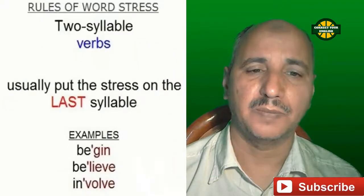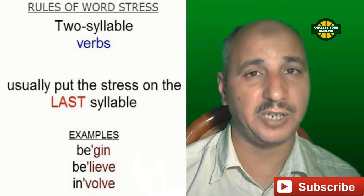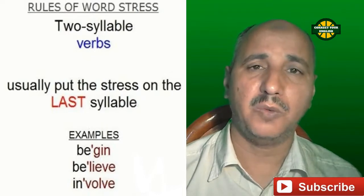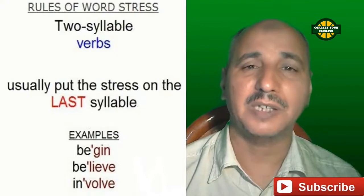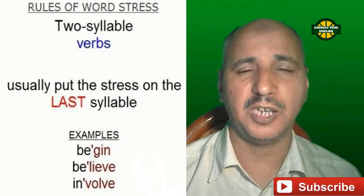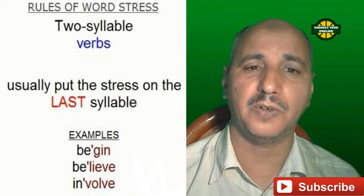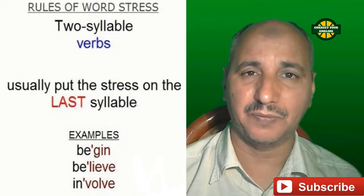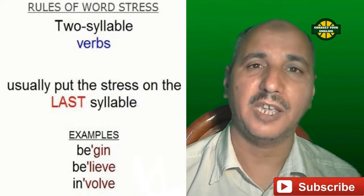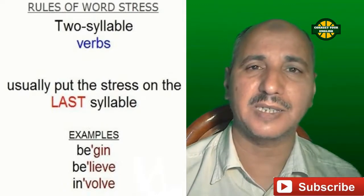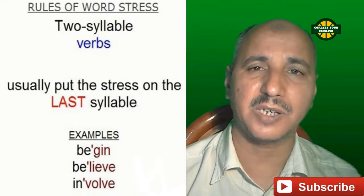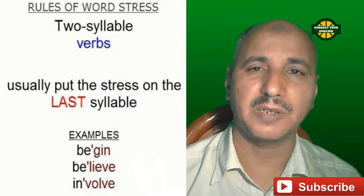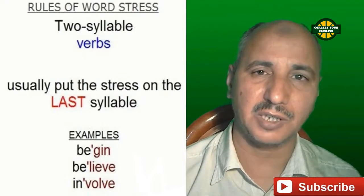Let's move to another rule. If we have a verb — not a noun, not a compound noun — and this verb consists of two syllables, usually we put the stress on the last syllable. In a noun we stress the first syllable, but for a verb the stress is on the second syllable. For example: 'begin,' 'believe,' 'involve.' As you see, the red part of the word is the second syllable, and this is called the primary stress.